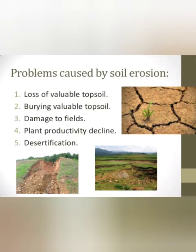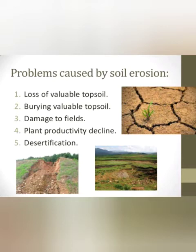Soil erosion results in the loss of soil fertility and makes the land barren. Soil erosion also leads to desertification — desertification refers to the increase of desert areas. Soil erosion can also lead to droughts and floods.